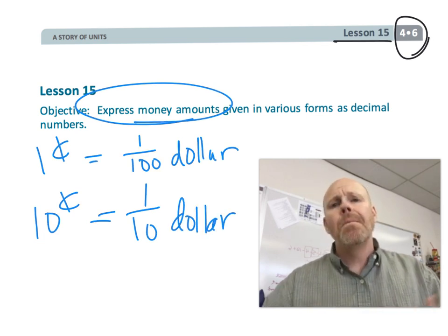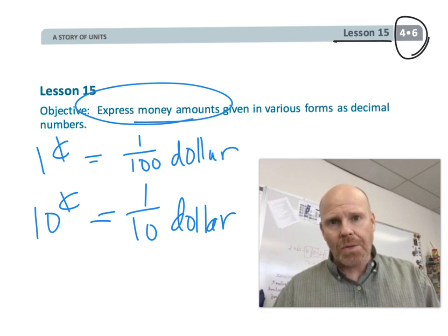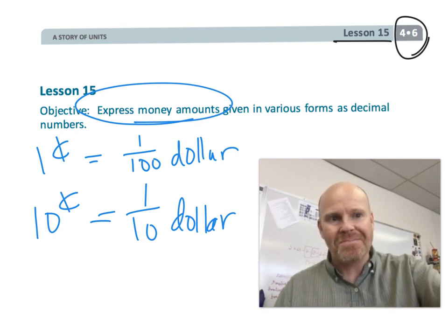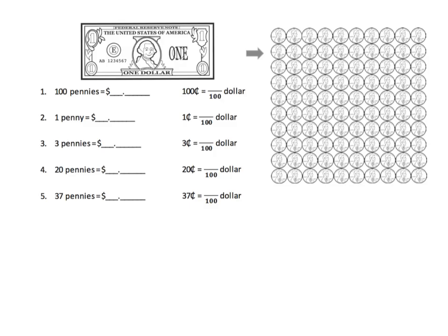Rather than just blindly following a rule. Here you can see a visual representation showing that a dollar is a hundred pennies — so a hundred pennies is equal to exactly one dollar. A hundred cents is a hundred hundredths of a dollar.